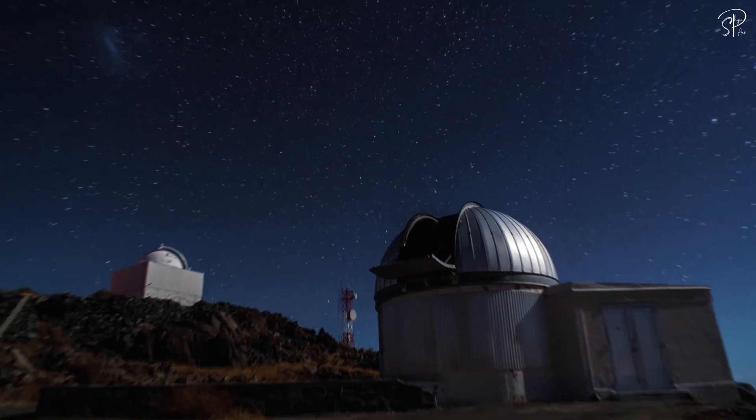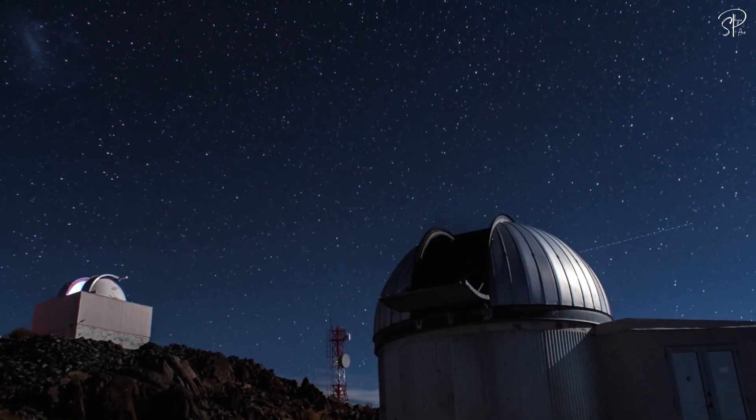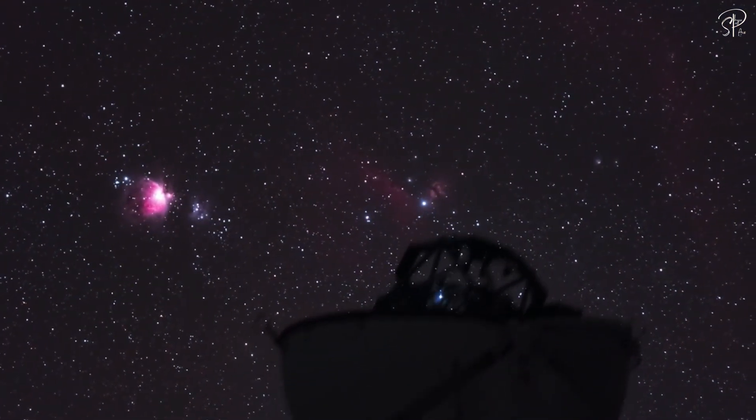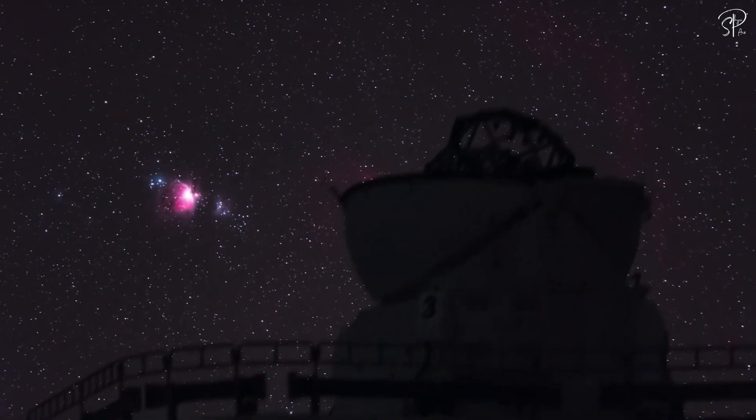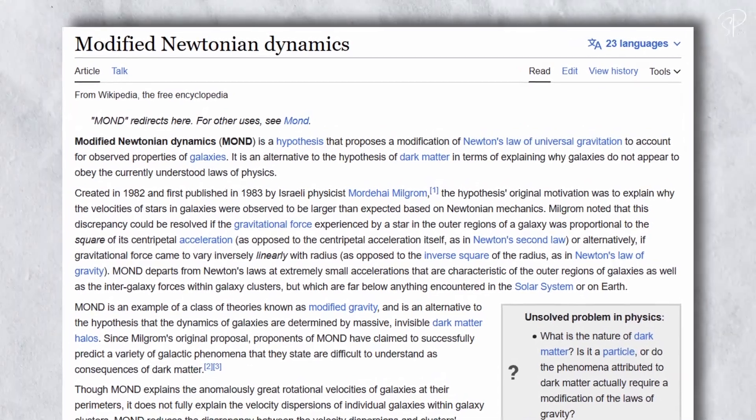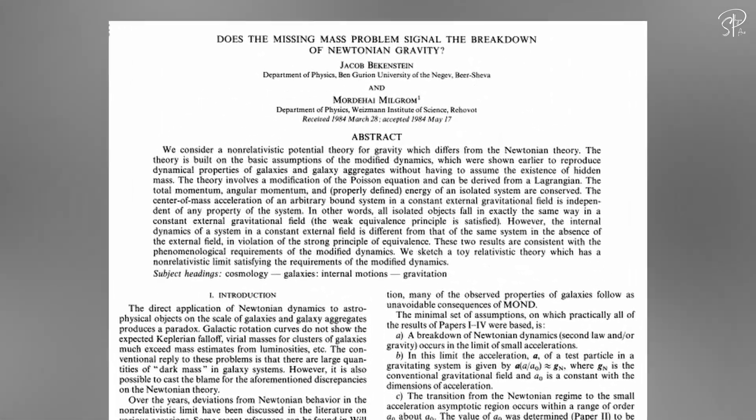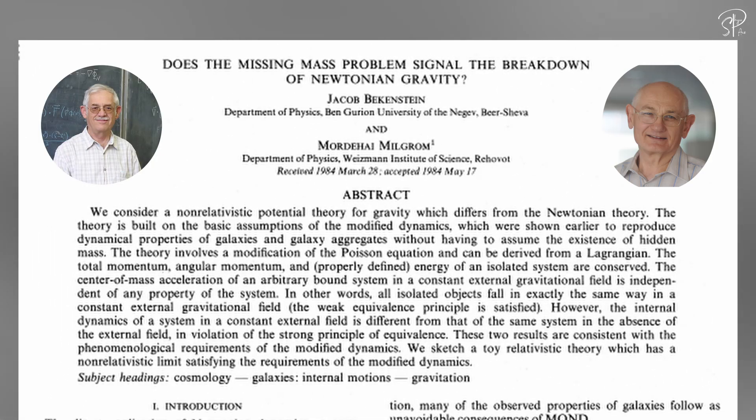To tackle this cosmic conundrum, scientists have proposed alternate theories of gravity that don't rely on dark matter to explain our universe's observations. Among these theories, the most well-known and studied is MOND, which was first proposed in 1984 by Bekenstein and Milgram.